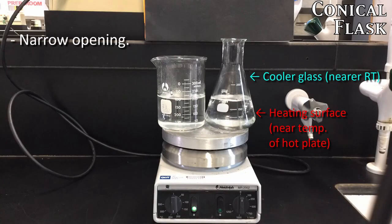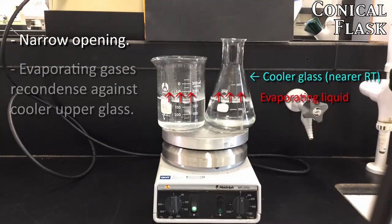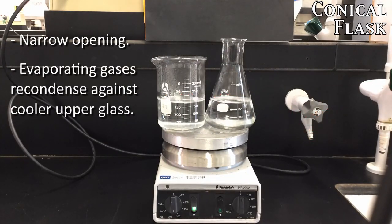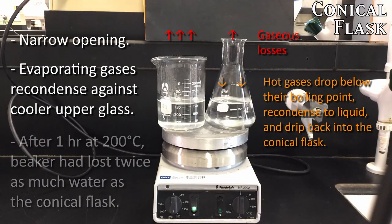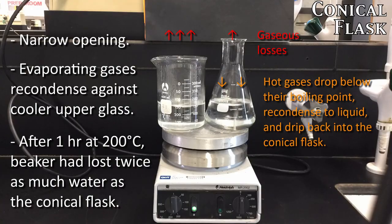The difference in design is most significant when working with boiling liquids. In this demonstration, the conical flask is able to retain more of the boiling liquid because the narrow neck allows evaporated gases to hit the cooler upper walls of the flask, where they recondense and drip back in a liquid state.